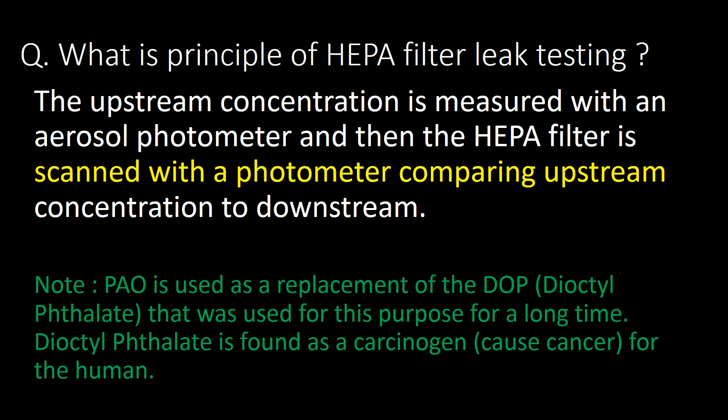What is the principle of HEPA filter leak testing? The upstream concentration is measured with an aerosol photometer, and then the HEPA filter is scanned with a photometer comparing upstream concentration to downstream. Note: poly-alpha olefin (PAO) is used as a replacement for the DOP test (dioctyl phthalate test) that was used for this purpose for a long time, as dioctyl phthalate was found to be a carcinogen causing cancer in humans.